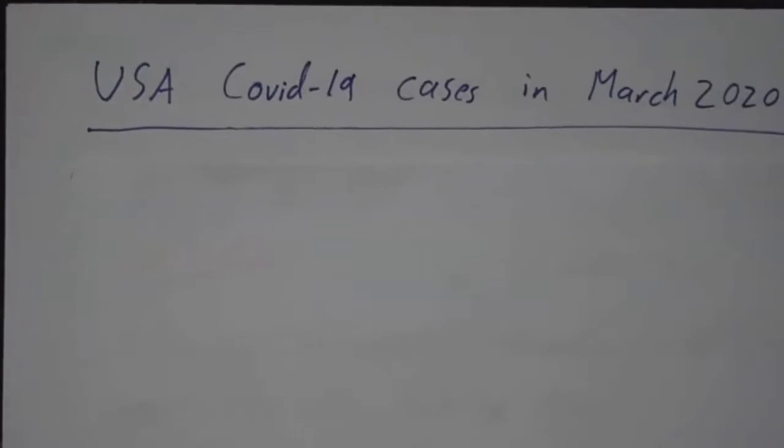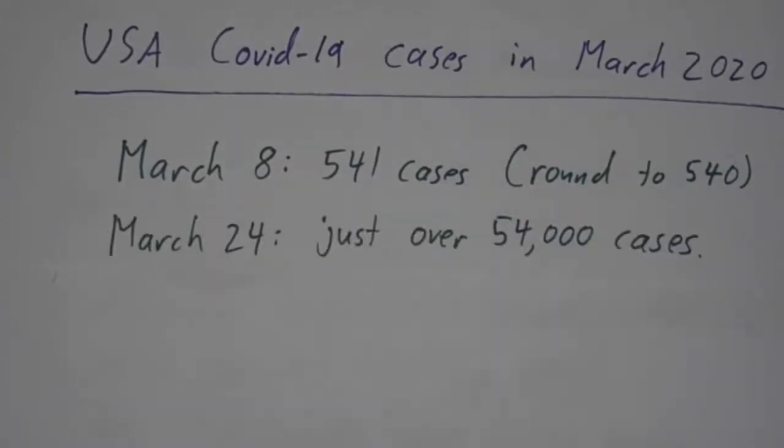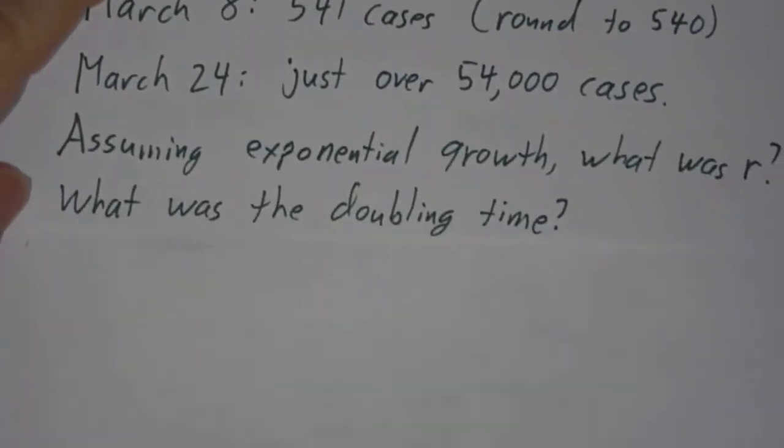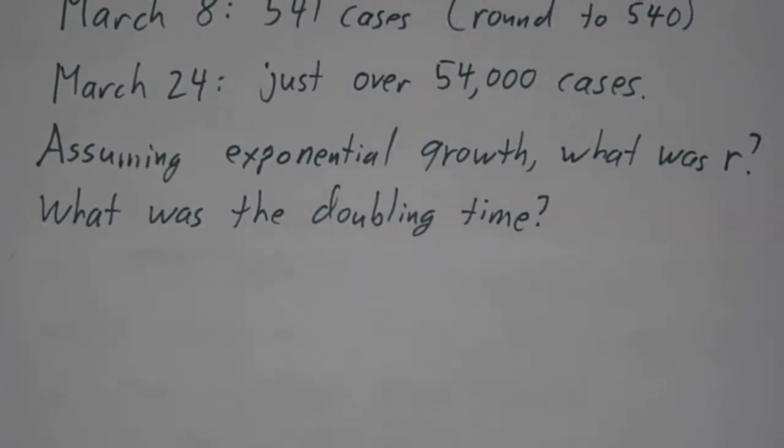Finally, let's figure out how fast something was growing. Let's look at the cases of COVID-19 in the United States in March 2020. On March 8th, there were 541 confirmed cases, and we're going to round that off to 540. 16 days later, there were just over 54,000 cases, and the numbers were pretty much growing exponentially. So during that time period, what was the growth rate r? What was the doubling time?